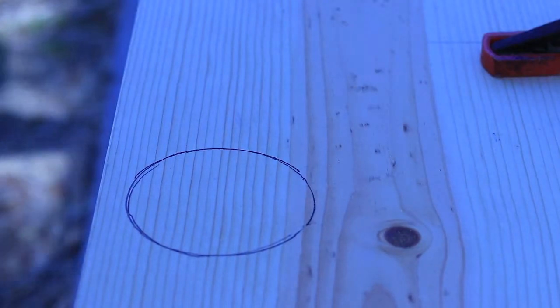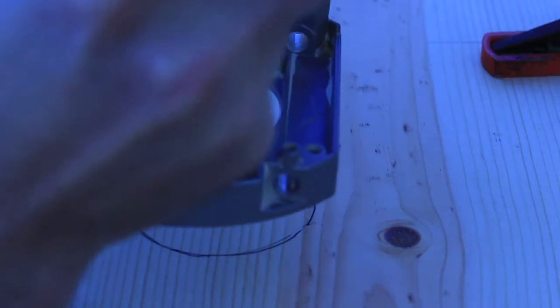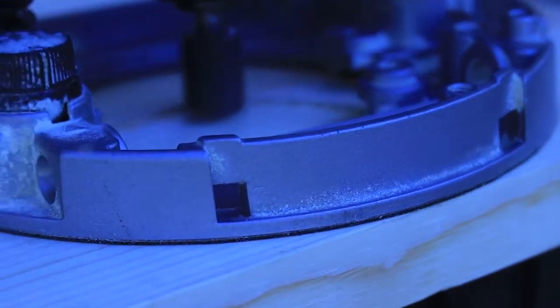So once you've got all your circles traced out and your boards clamped down, go ahead and grab your plunge router, set it to a minimal depth, and go ahead and route out those circles.